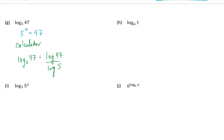All you need to do now is type this into your calculator. You should get an approximate value of 2.39. Then you can substitute that back into the exponential to verify your result. 5 to the exponent 2.39 is approximately 47.